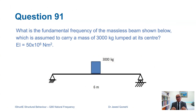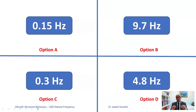Let us solve our first example: a simply supported beam with a central load applied. What is the fundamental frequency of this massless beam, which is assumed to carry a mass of 3000 kg — roughly equivalent to adult African elephants — lumped at the center. The length of the beam is 6 meters and EI, or flexural rigidity, is given as 15×10⁶ Newton meter squared. There are four options to choose from. I suggest you pause this video, solve the question yourself using the formulas mentioned earlier, and then come back to check the solution.